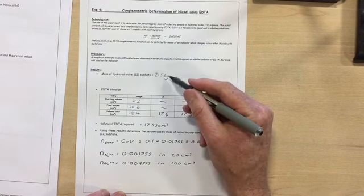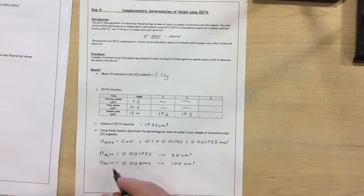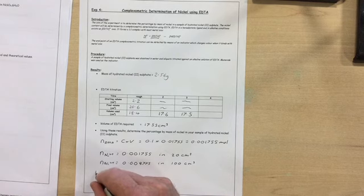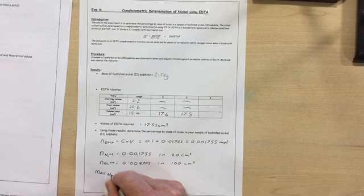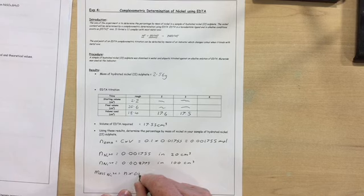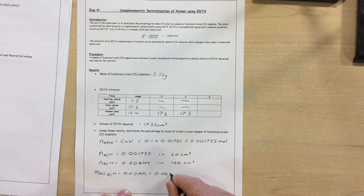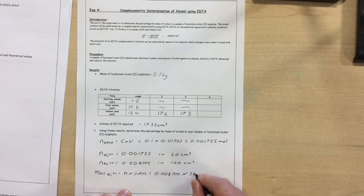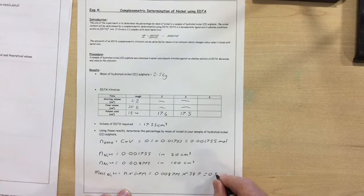That entire sample was 2.56 grams. That's the number of moles of nickel. So the mass of nickel would be the number of moles times the GFM. So 0.008775 times the gram-formula mass of nickel which is 58.7 equals 0.515 grams of nickel.